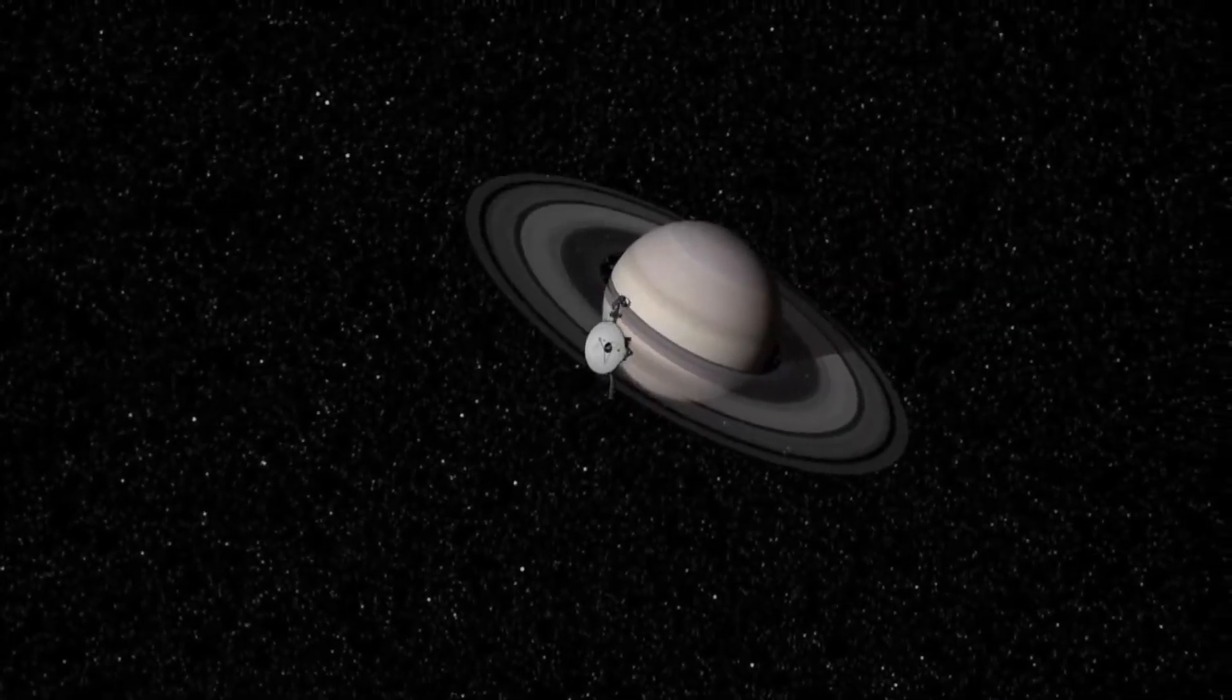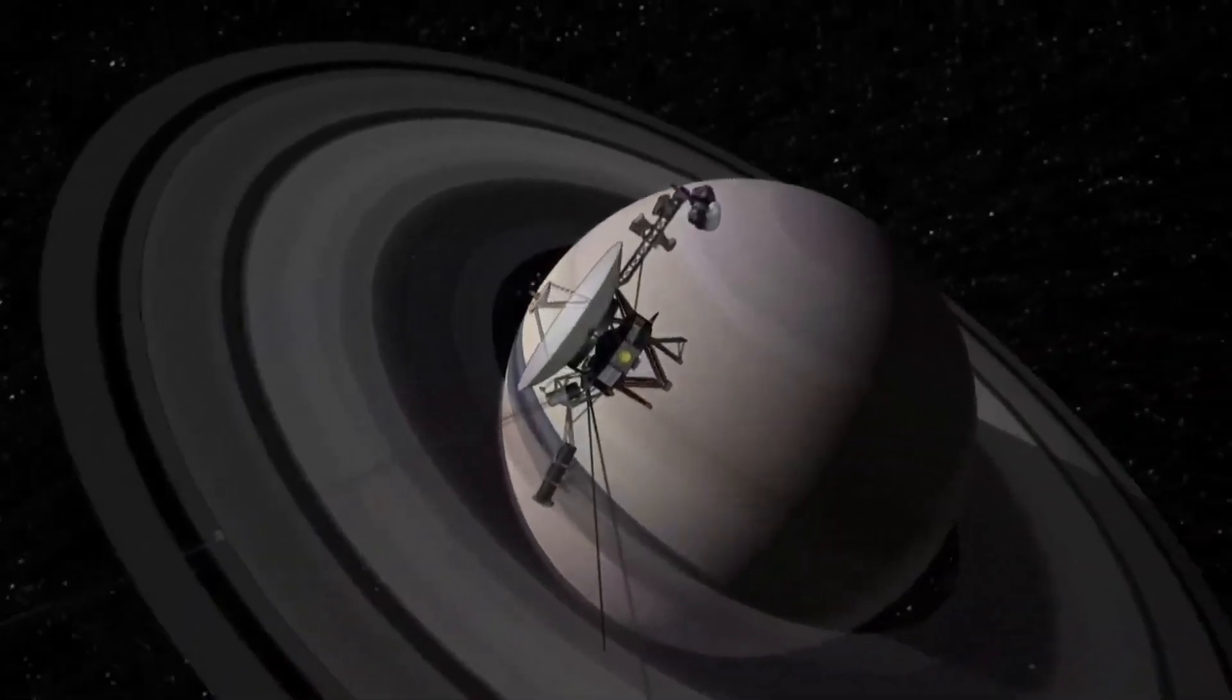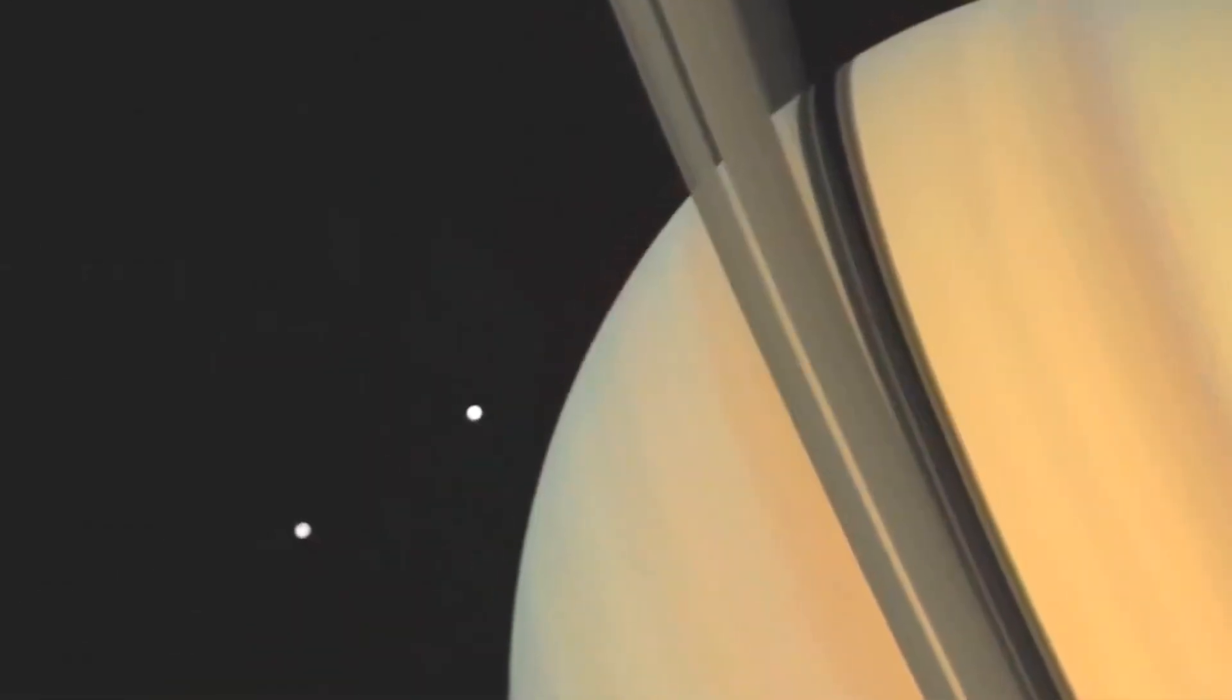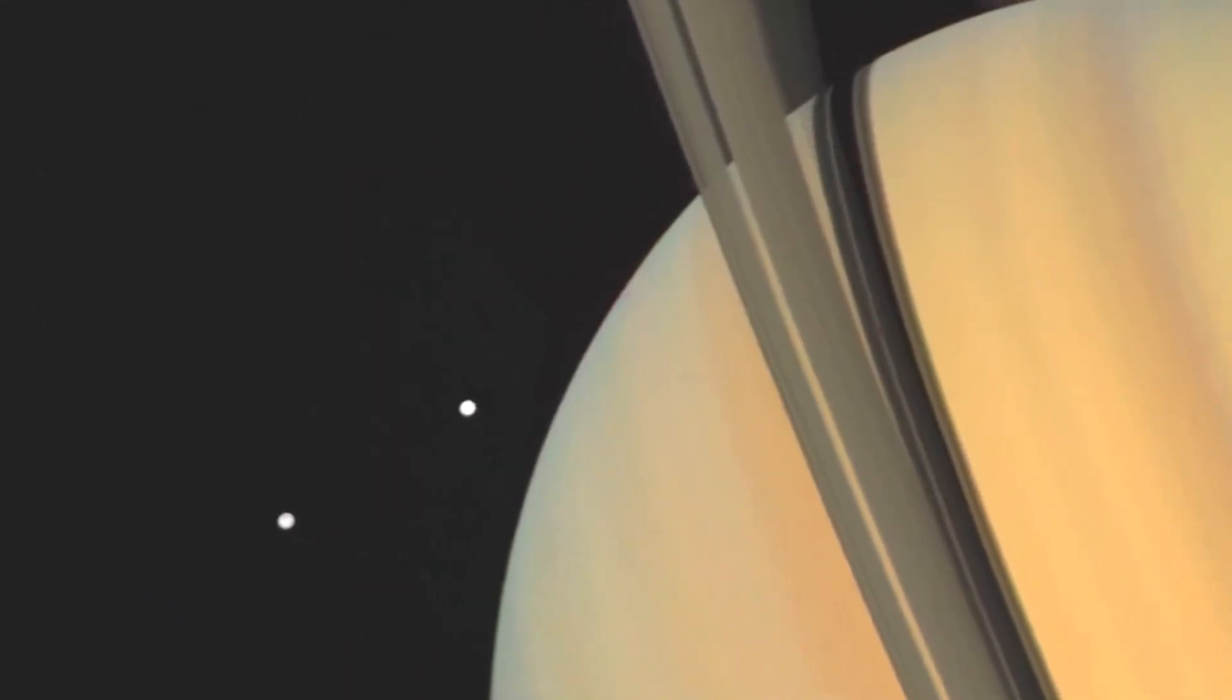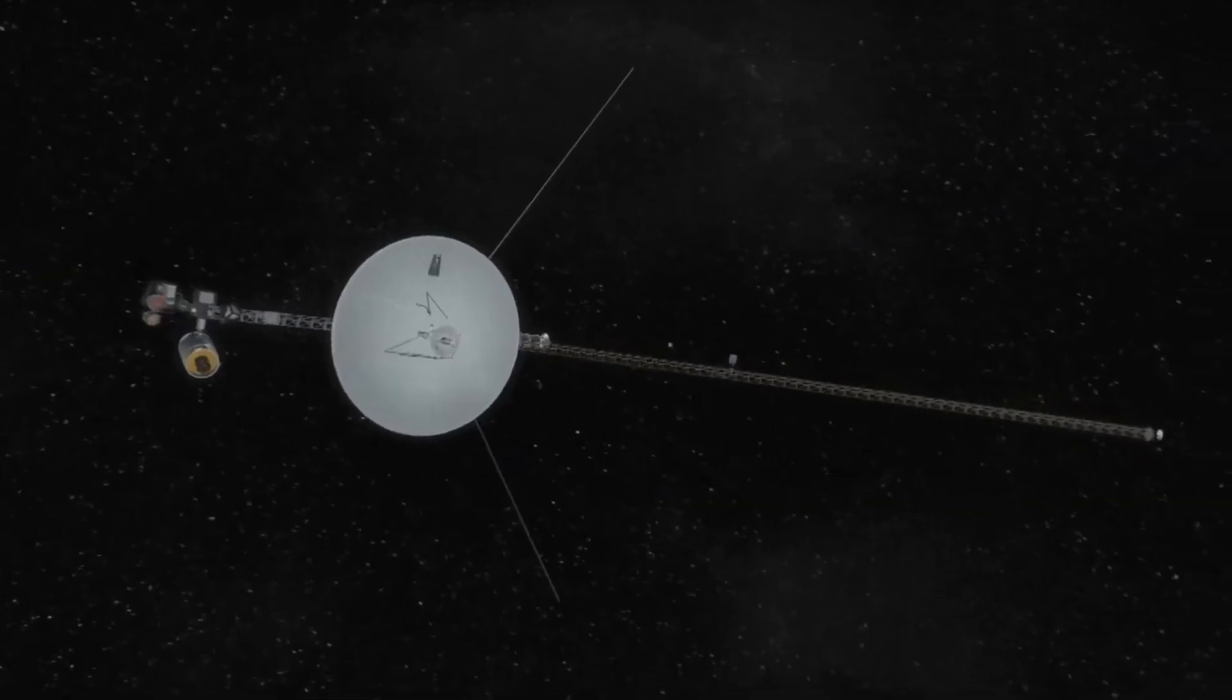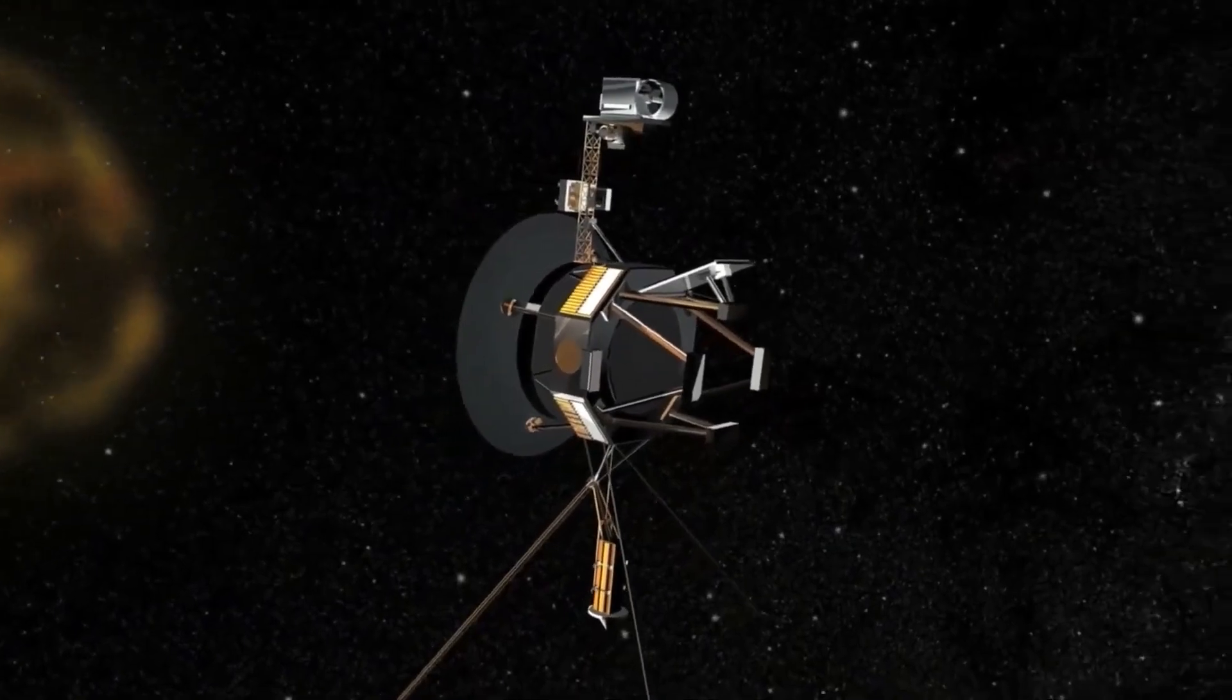But exploring Saturn proved to be a bit trickier than anticipated. The Voyager had some close calls with rough terrain and space rocks, but the most exciting find was four previously unknown moons, including the massive Titan. This discovery was a reminder that even with all the information we had gathered, there were still larger details waiting to be uncovered in the depths of space.